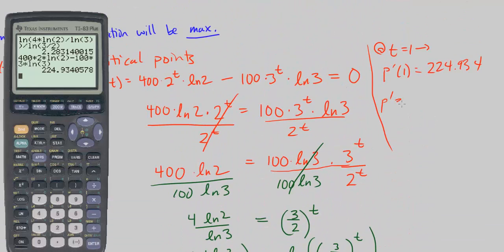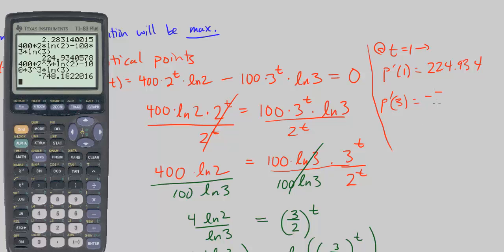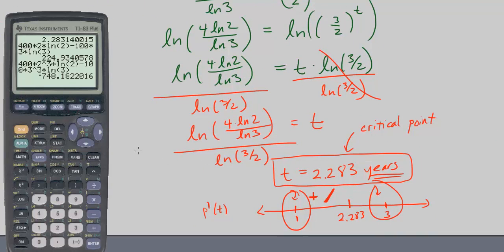Now let's try p prime of 3. Plugging in 3, so it's 400 times 2 cubed times ln of 2 minus 100 times 3 cubed times ln of 3. And that gives us negative 748.182. And again, we don't care so much about the value as much as we care about the sign. So we know it's negative over here, meaning p of t is decreasing. So this we know is a maximum, so t being 2.283 years will be our maximum population.